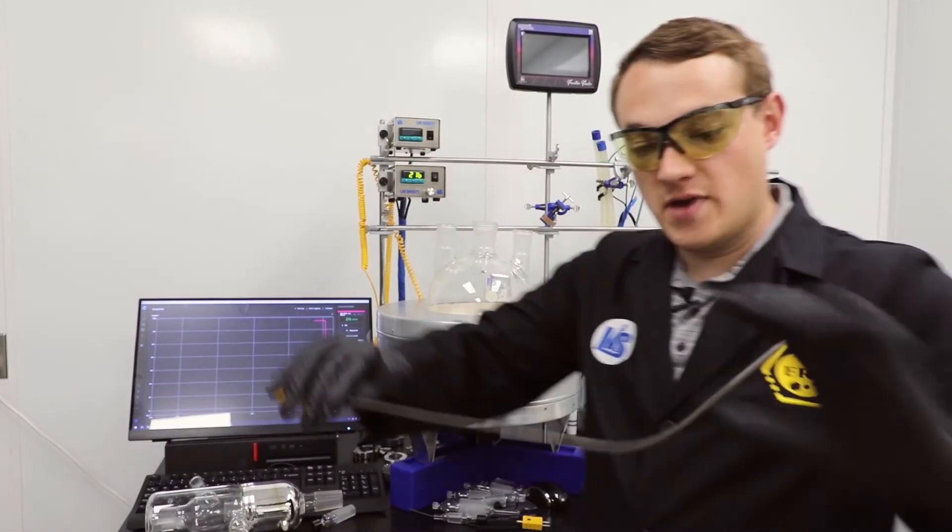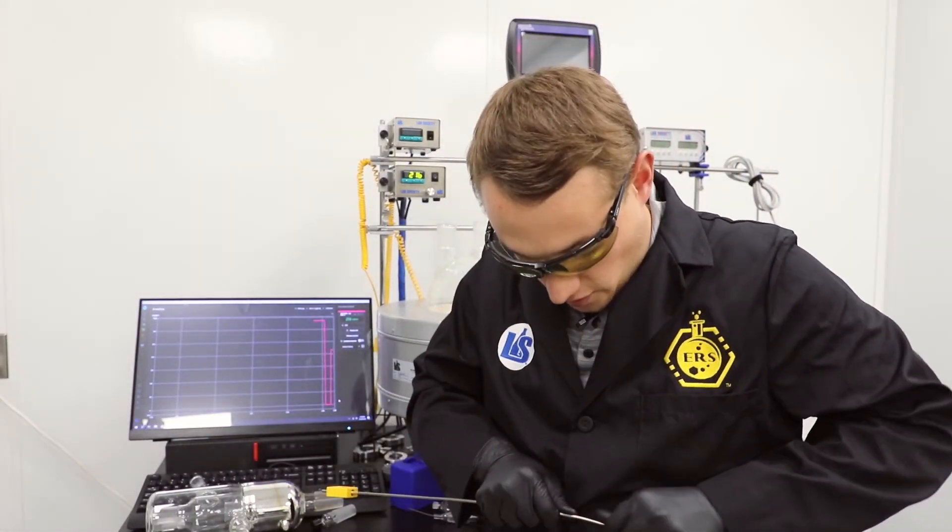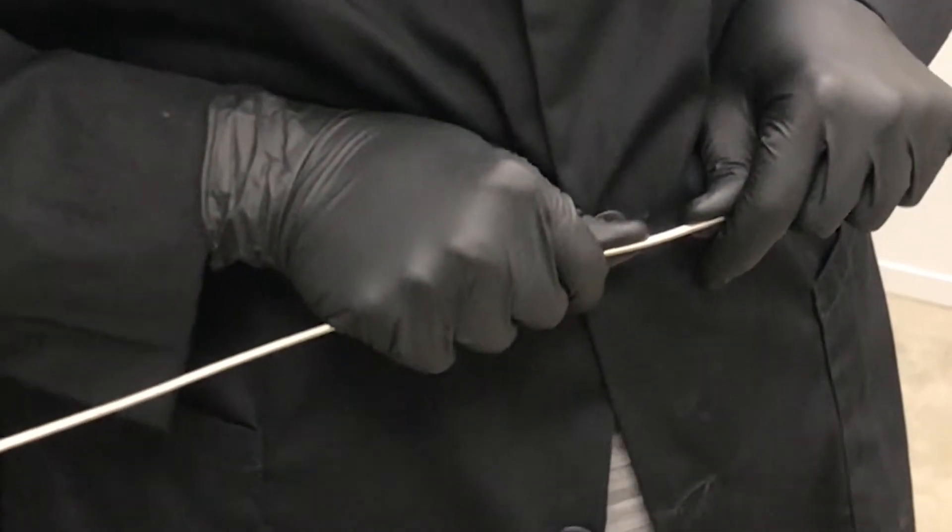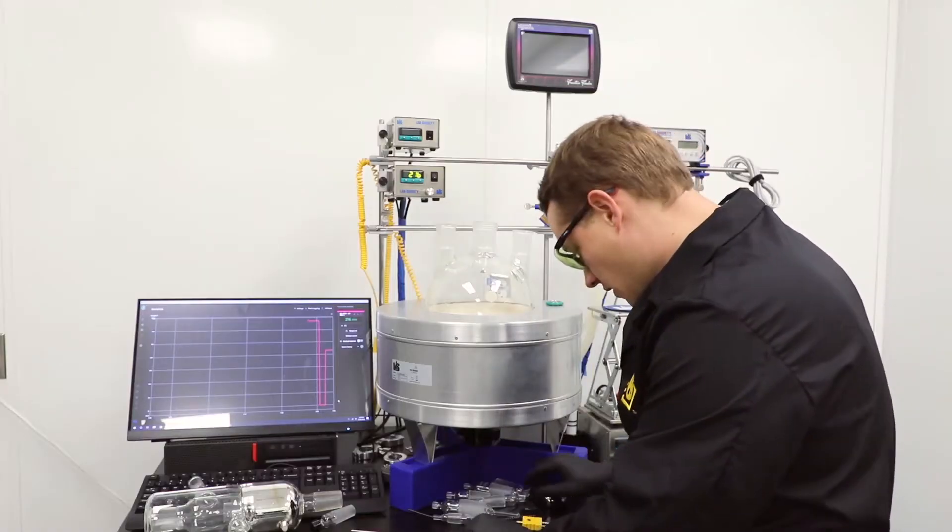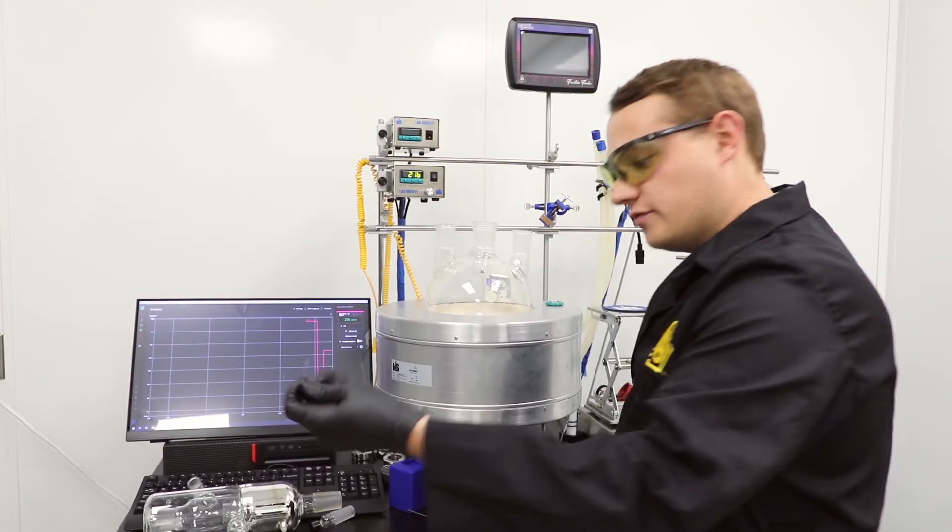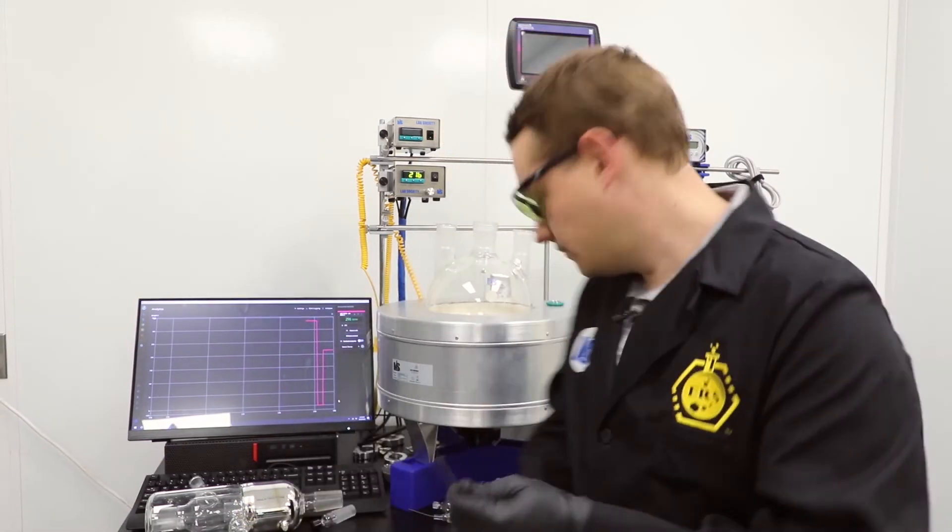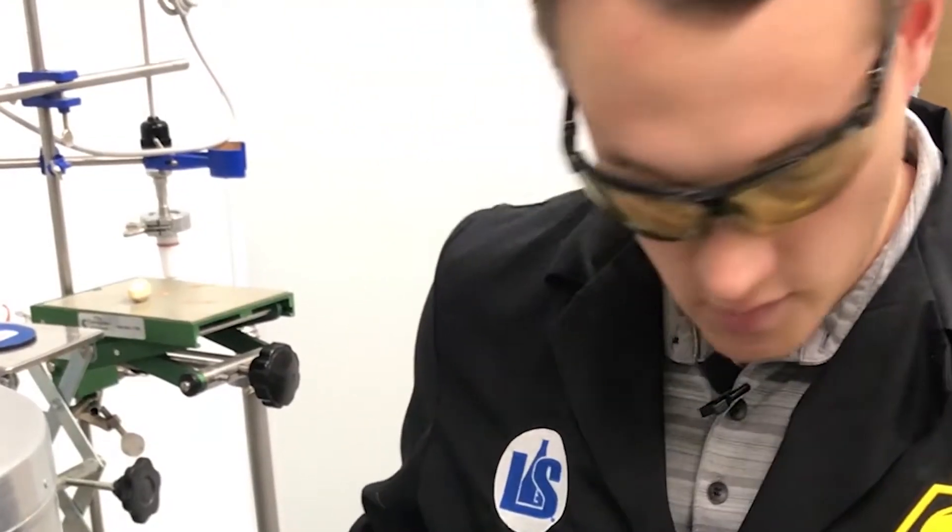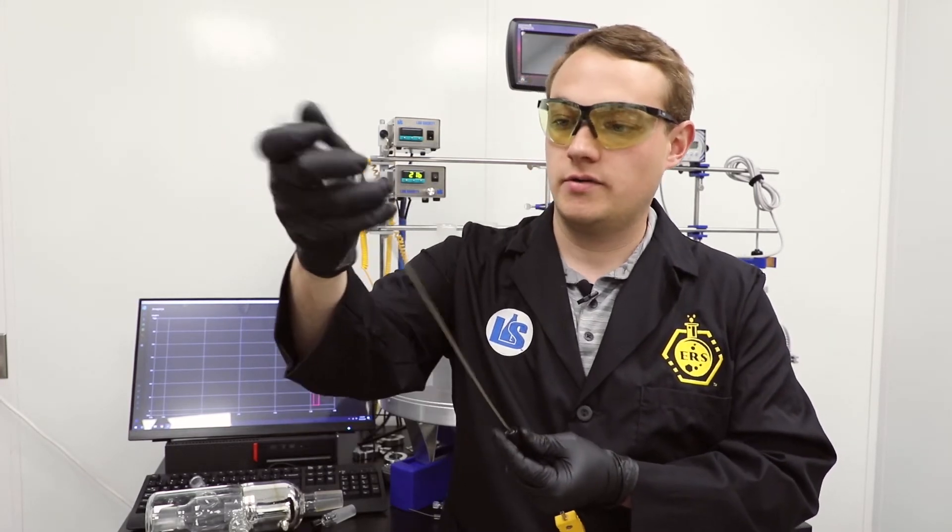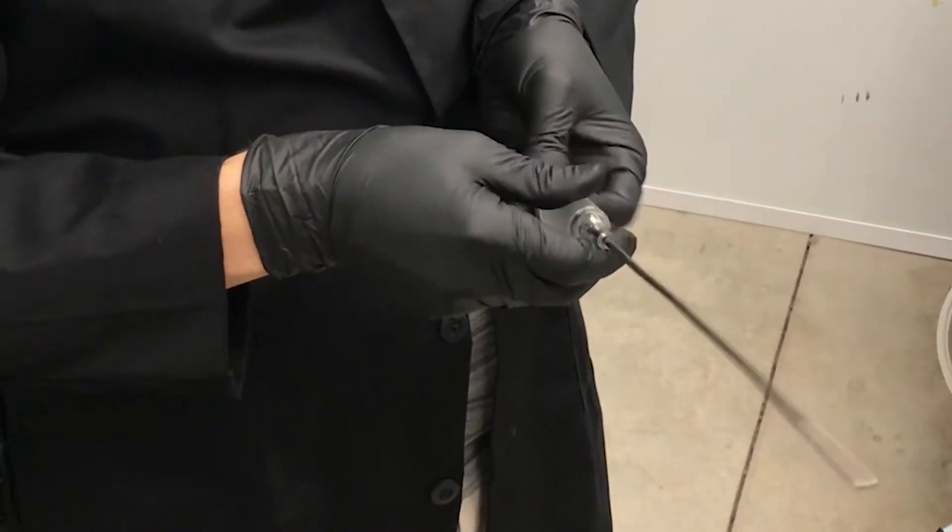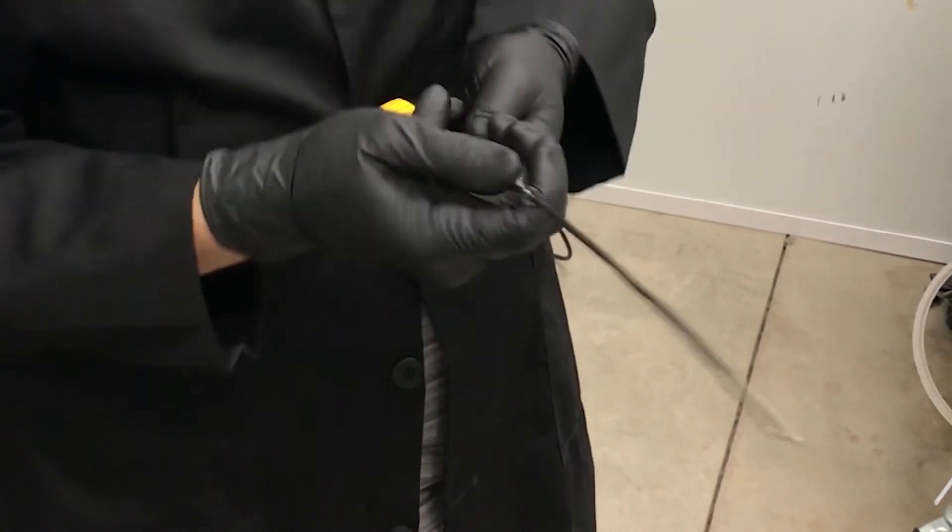As you can see my thermocouple probe is bent. Again as I was saying in another one of our hacks, do not try to insert a bent thermocouple probe into a thermocouple adapter that's glass. It'll break. So we're going to assemble our thermocouple first and thermocouple adapter. Cap, O-ring, adapter. Notice it slips straight on because our probe is nice and straight.